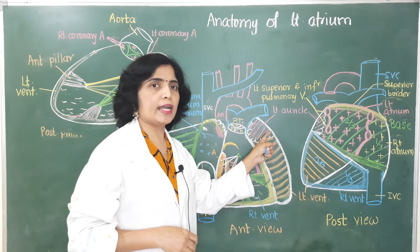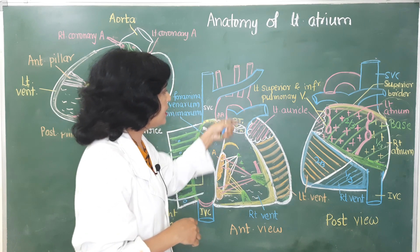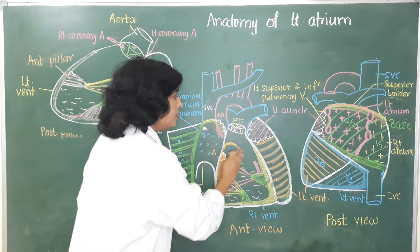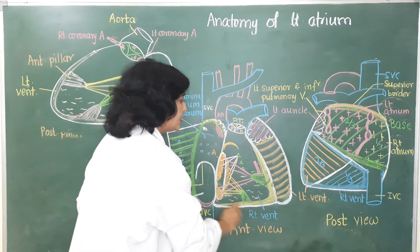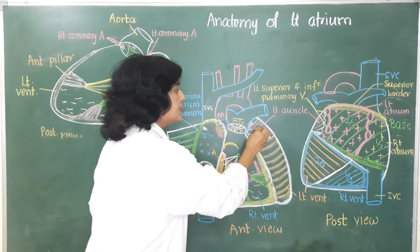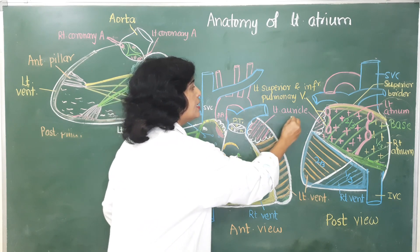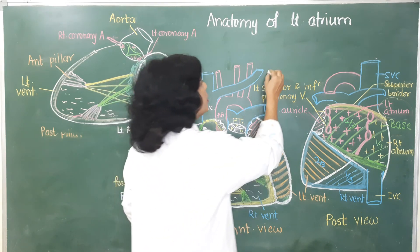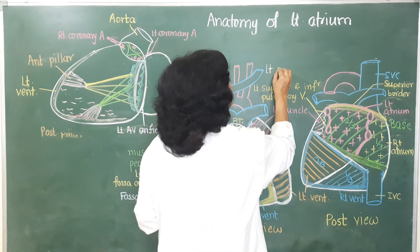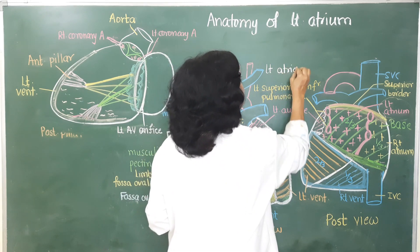The left atrium shows an ear-like appendage which extends anteriorly. It is not visible from outside as it overlaps the root of the pulmonary trunk and the infundibulum of the right ventricle. This ear-like appendage is called the left auricle, also known as the left atrial appendage.